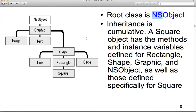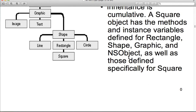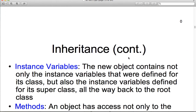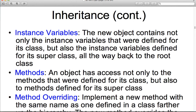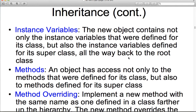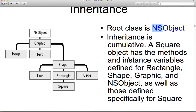Inheritance is cumulative. So if we have NSObject, we have NSObject in Square, in Rectangle, Shape, and Graphic all the way up — just like any other programming language. A square object has the methods and instance variables of a rectangle, a shape, a graphic, NSObject, and anything defined specifically for square. In terms of our inheritance, we have instance variables, methods, and method overriding.